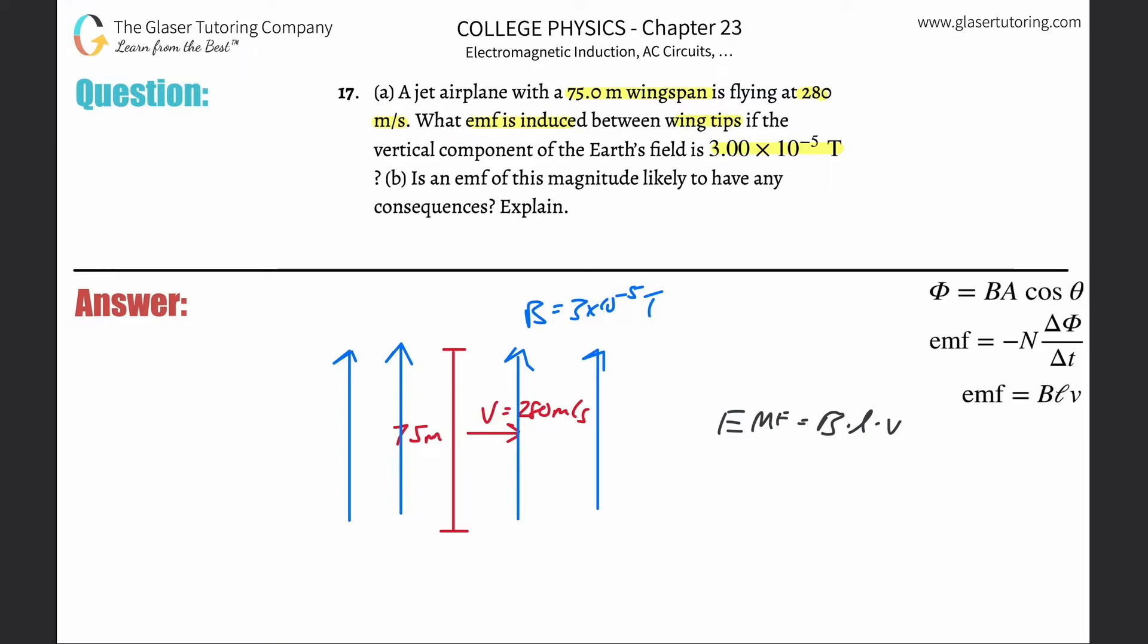So this is very straightforward. That EMF here that's induced will be equal to 3 times 10 to the minus fifth, the length is going to be 75 meters, and then the velocity was 280. All the standard units are there so we don't have to do any conversions, thankfully. So that's just simply going to be 3 times 10 to the minus fifth times 75 times 280.